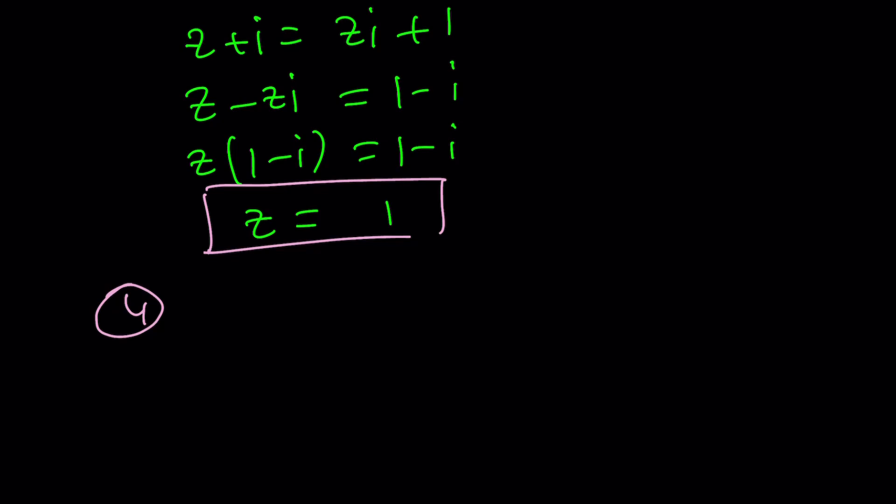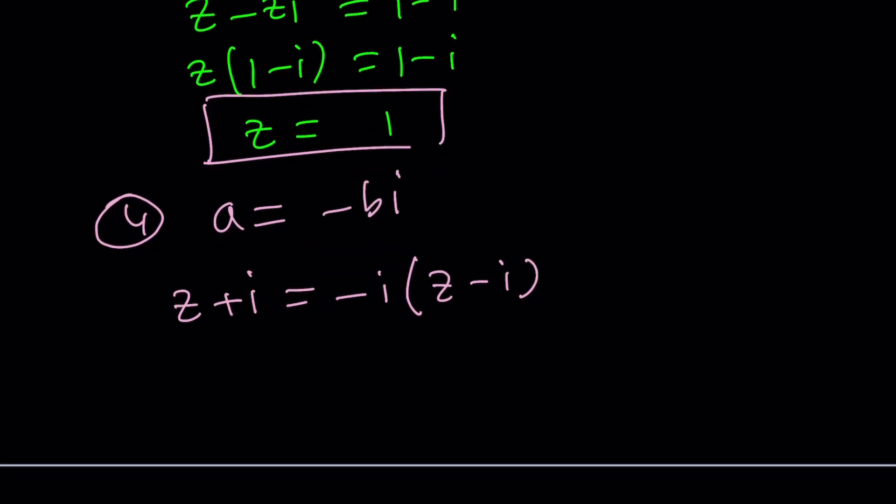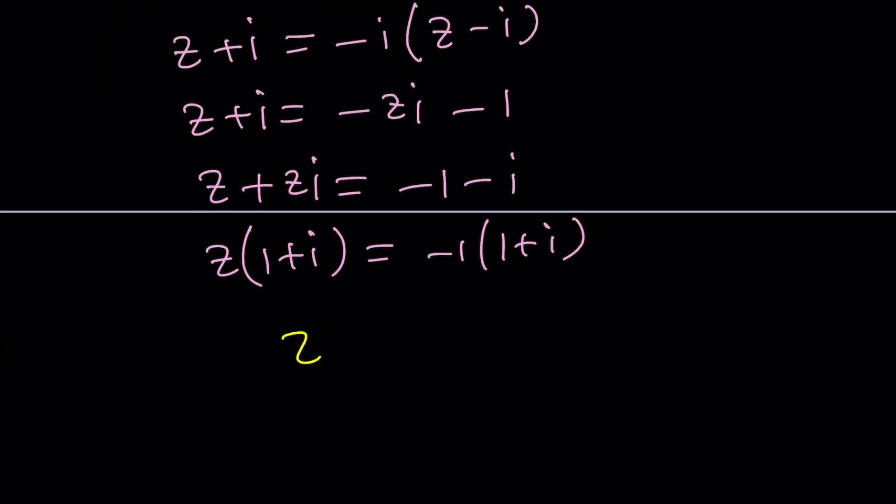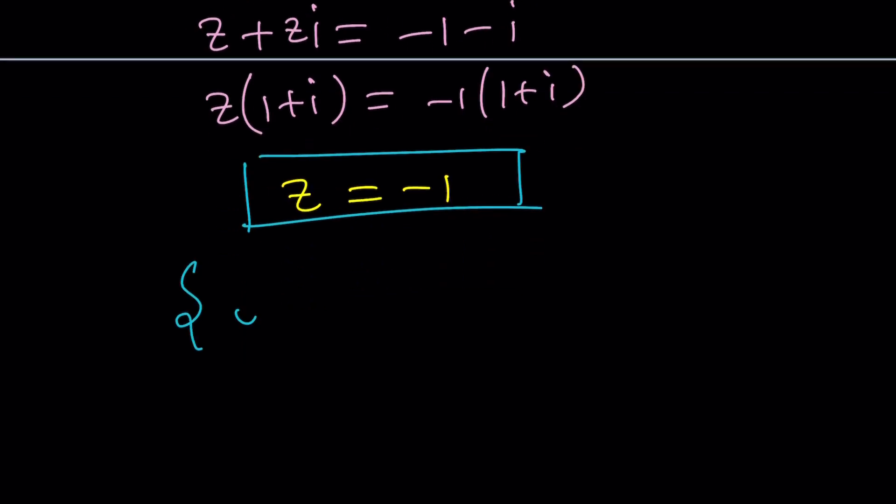These are all complex numbers, but they are also real, right? We're looking for non-real solutions. Number four. Let's see if you can find it this time. Case number four was A equals negative B I. Z plus I is negative I times Z minus I. Z plus I is negative ZI plus I squared, which is minus one. Put the Z and ZI together and put the negative one and I together. Z times one plus I is negative one times one plus I. We can factor it. Wait a minute. Z equals negative one from me.